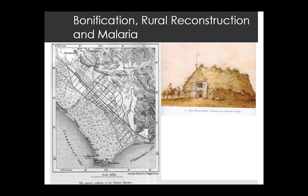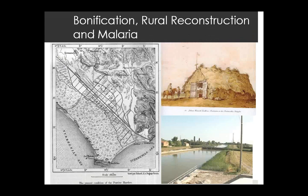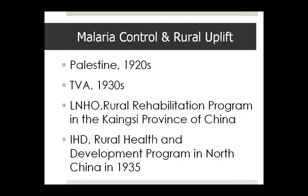The most famous was in the Pontine Marshes in Italy, where a major operation under the Italian government in the 1920s transformed a population of about 2,000 mostly sickly people with very little agriculture into 200,000 acres of opened farmland. It combined drainage with agriculture, industry, and education, improving the general well-being of the people. Other examples include Palestine in the 1920s, the Tennessee Valley Association in the 1930s, the League of Nations World Rehabilitation Program in Jiangxi Province in China, and the International Health Division's program in North China in 1935 — all combining social, economic, and educational improvement with malaria control.